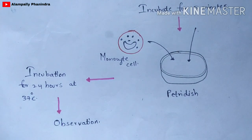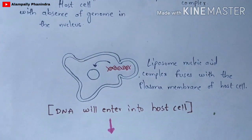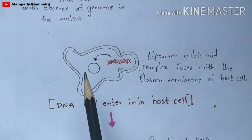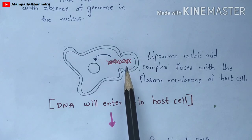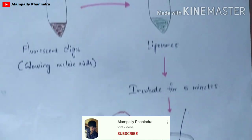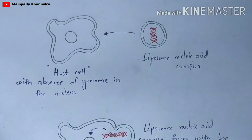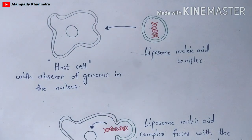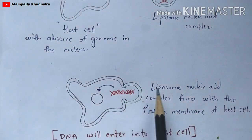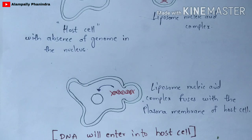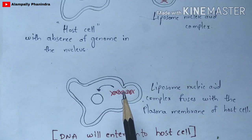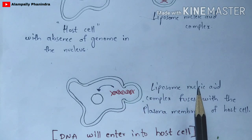After 24 hours, you make your observation. The liposome interacts with the host cell or monocyte cell, and since the liposome contains the fluorescent nucleic acid mixture, the nucleic acid enters the host cell. This mechanism can be observed using a fluorescent microscope, because the fluorescent nucleic acids produce color, allowing us to visualize the transfer process under fluorescent microscopy.